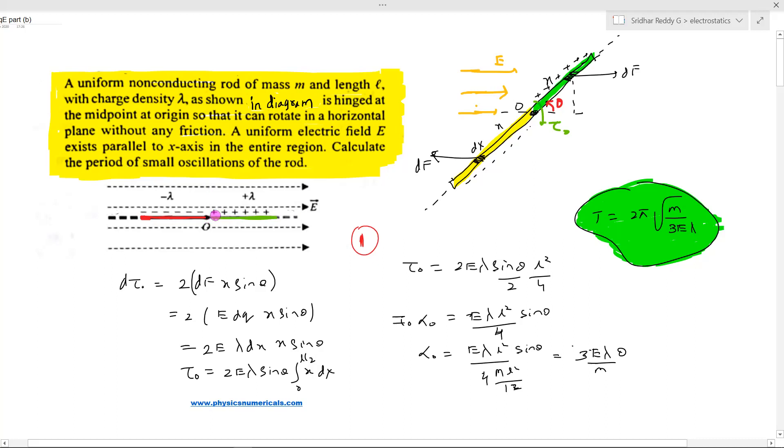The rod is hinged at the midpoint at the origin so that it can rotate in a horizontal plane without friction. A uniform electric field exists parallel to the x-axis in the entire region. Calculate the period of small oscillations of the rod. We have to find out the time period of oscillations of the rod.